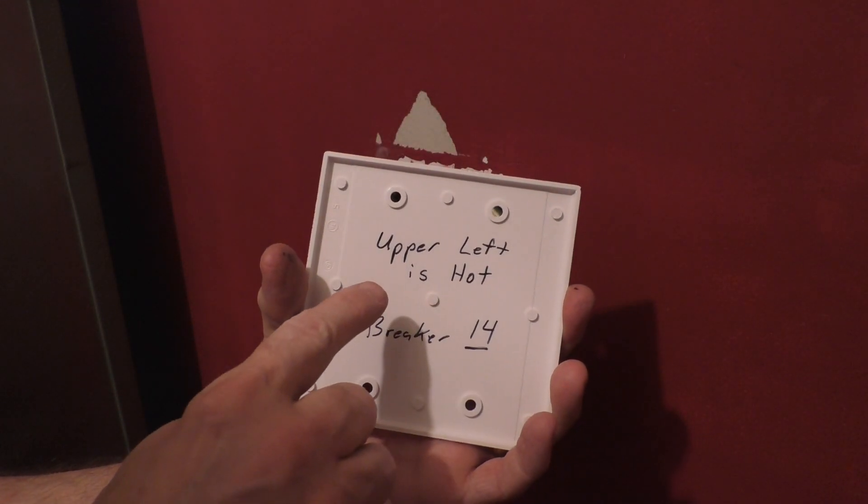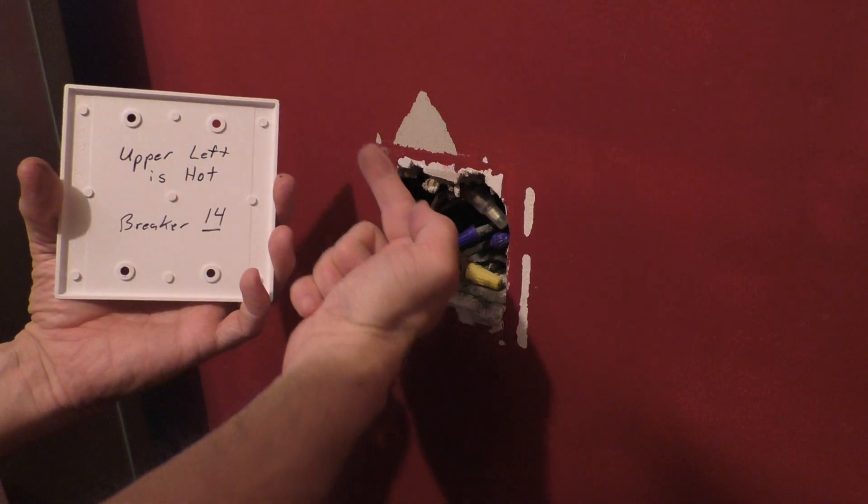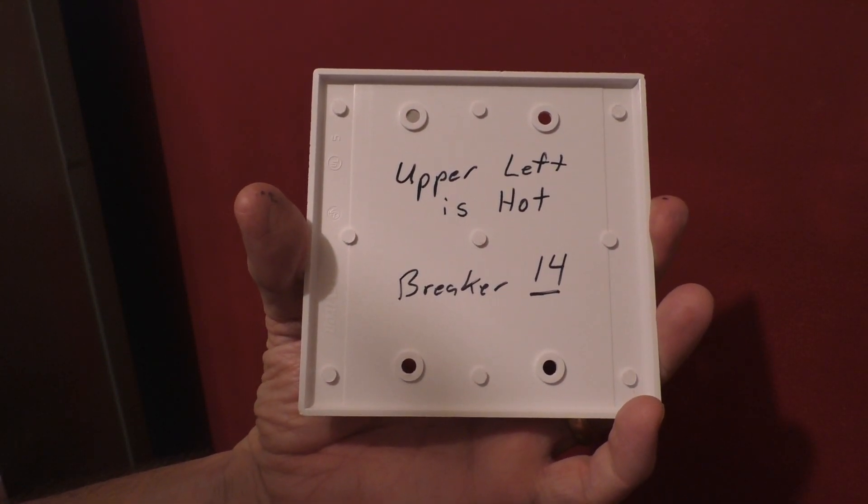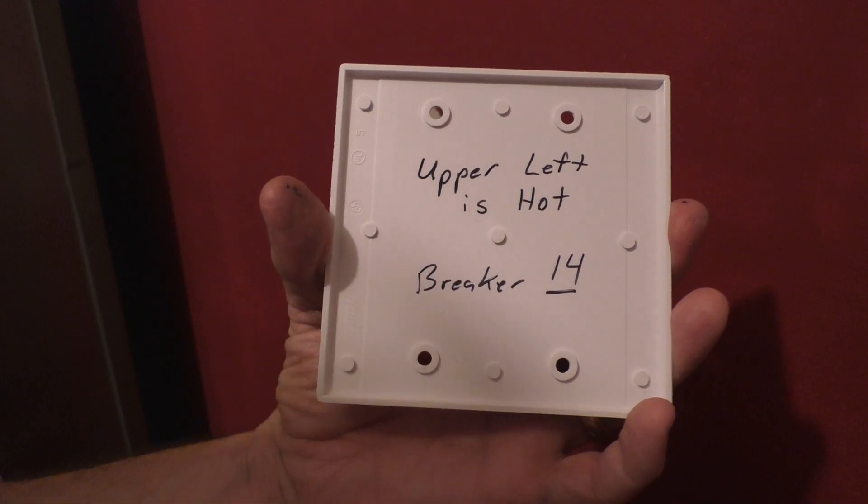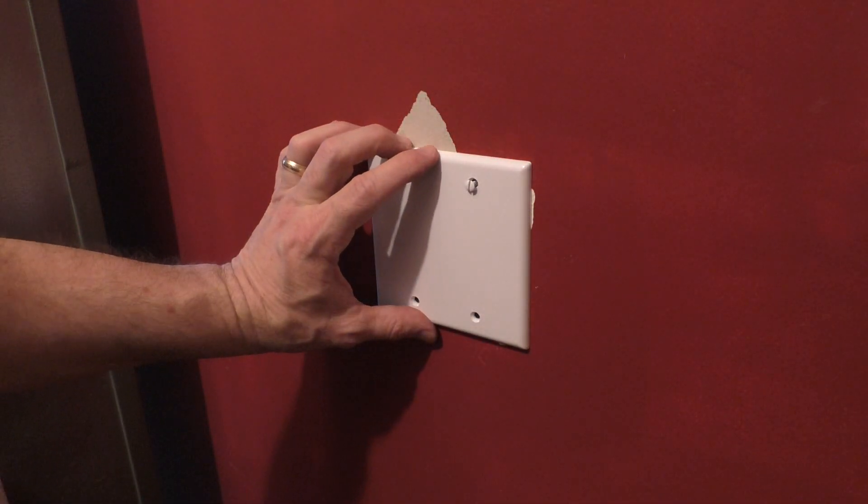For future reference, I did label which wire was hot and the breaker it was associated to. This will just help me in the future if I need to do future work in this box. Now it's just a matter of inserting the four screws to hold the plate in place, and then you're done.